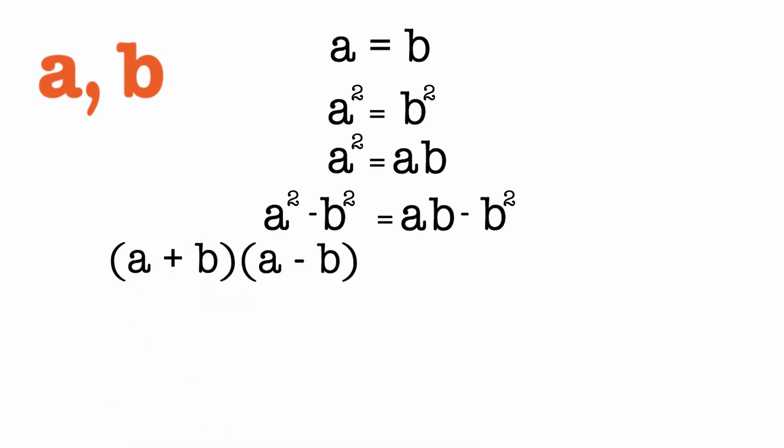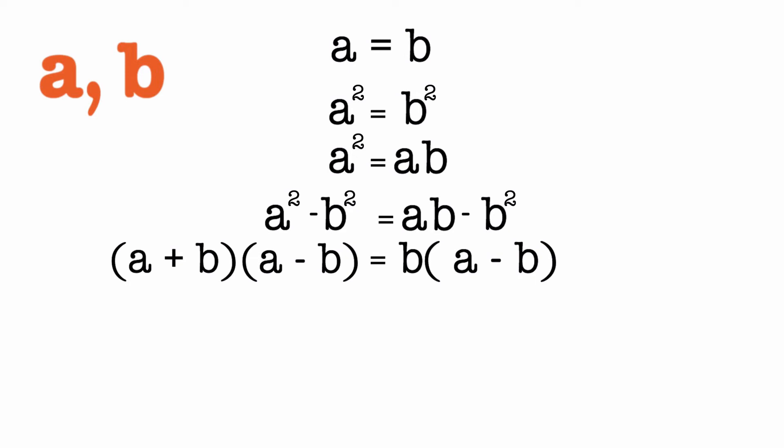So the left hand side can be further written as the product of A plus B and A minus B. And on the right side, we can get this B out and have B times A minus B.